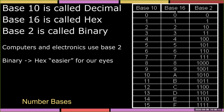Let's extend that to base 16, where we can express 16 things in one spot. We go from zero all the way to F, and right after F we have 10 — and that 10 in base 16 is equivalent to 16 in base 10.